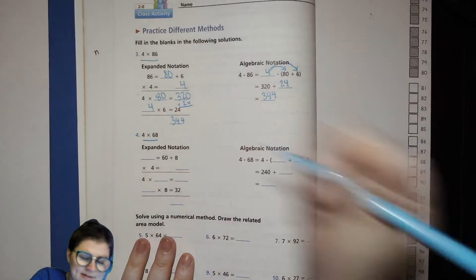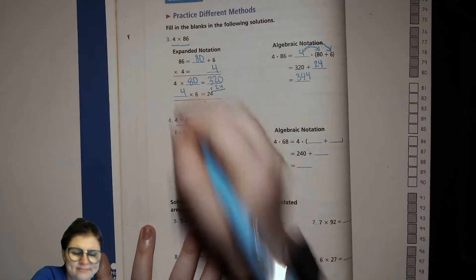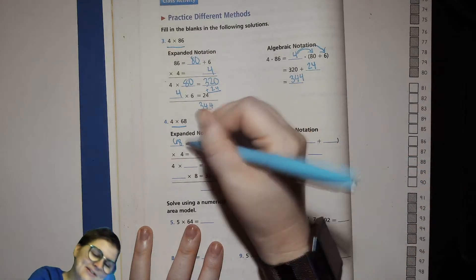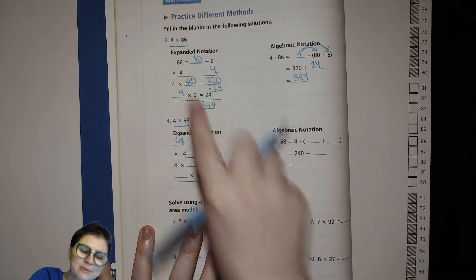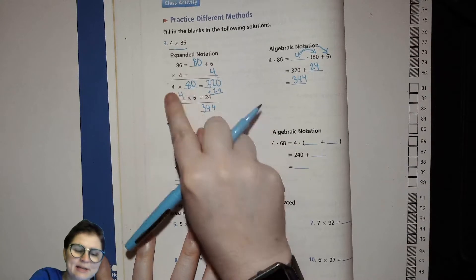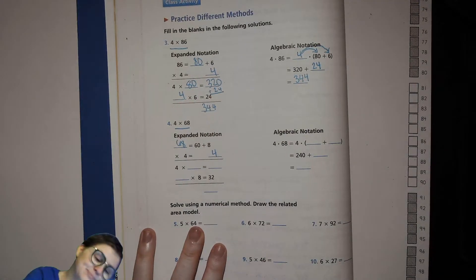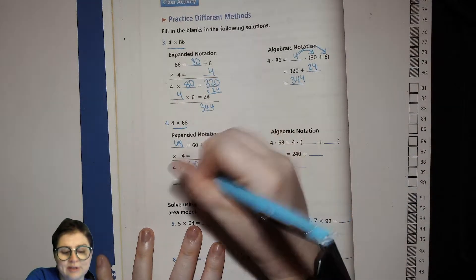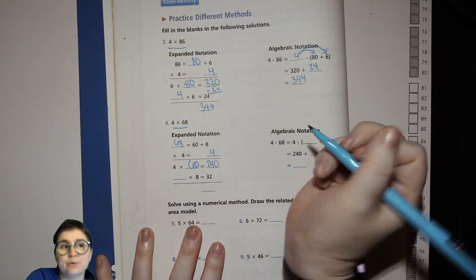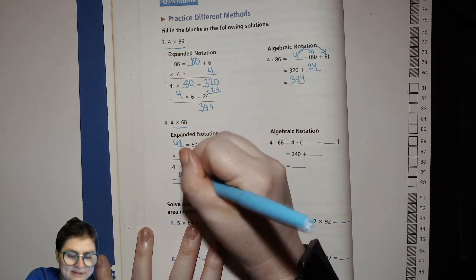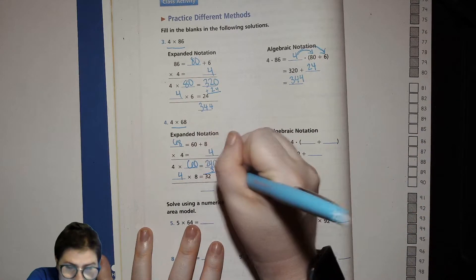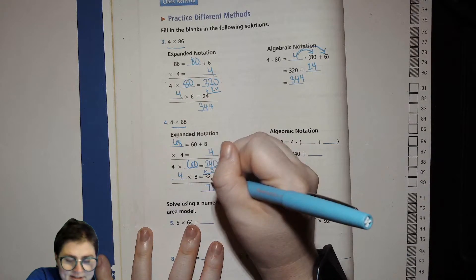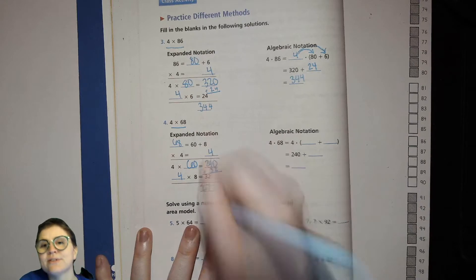4 times 68. Expanded notation. So what equals 60 plus 8? 68. 4 equals what? 4. Now what do I put in here? Think about it. We took our tens place number and found the product using what we know about multiplying things by tens. So 4 times 60. What's 4 times 6? 24. So 4 times 6 tens is 24 tens, also known as 240. And then 4 times 8 is 32. Let's add those up. I'm going to do the same thing right under here. 0 plus 2 is 2, 3 plus 4 is 7, 2 plus nothing is 2.